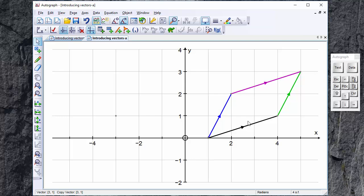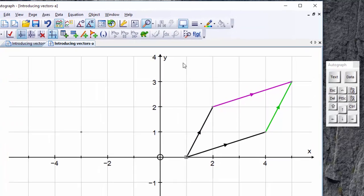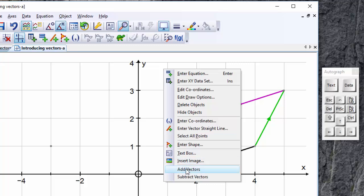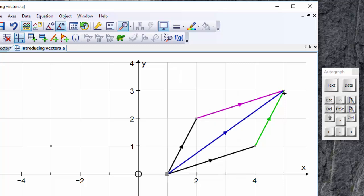So to demonstrate this, we'll select that vector, this vector, and this point here and right click, add vectors. And there we have the diagonal.